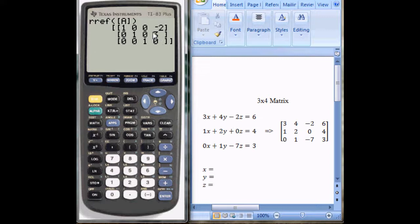Now, the numbers that appear in the last column will be the solutions to the problem. So X here is negative 2, Y is 3, and Z is 0. And that would be how to input this matrix into your TI-83.